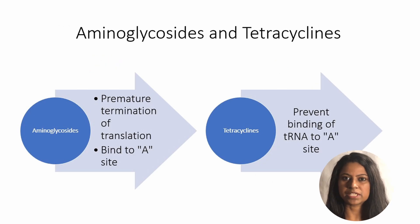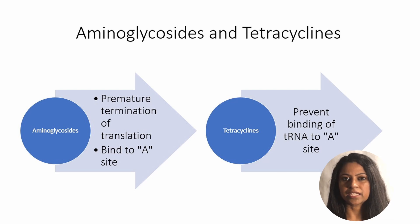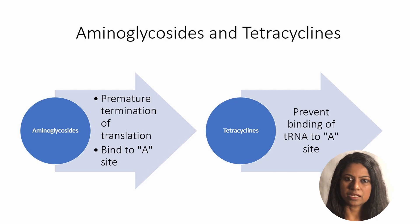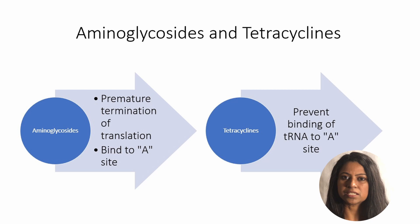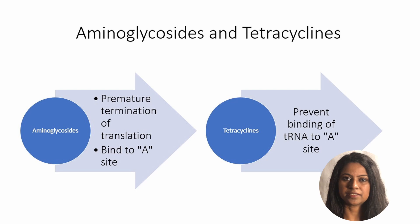Aminoglycosides inhibit protein synthesis by causing premature termination of mRNA translation by binding near the A site on the 30S ribosome. Aminoglycosides act synergistically with penicillins, which lyse the cell wall, allowing the aminoglycoside to enter the cell and inhibit the ribosomes. Tetracyclines and glycylcyclines like tigecycline prevent binding of transfer RNA to the A site.